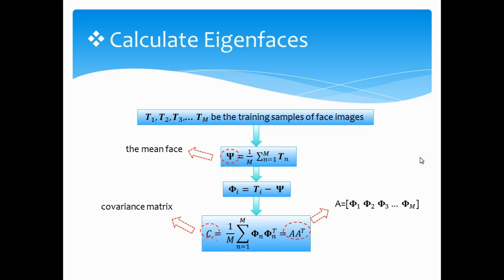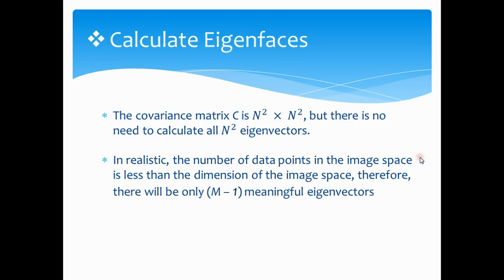Let T1 to Tm be the training samples. Then, the application will first calculate the mean face and get the covariance matrix C. The eigenfaces are the eigenvectors of the covariance matrix C. Although C is N square by N square, we do not need to calculate all the eigenvectors. Due to the fact that the number of images in the training set is less than the dimension of the image space, there will be only M-1 meaningful eigenvectors while the others being zero.